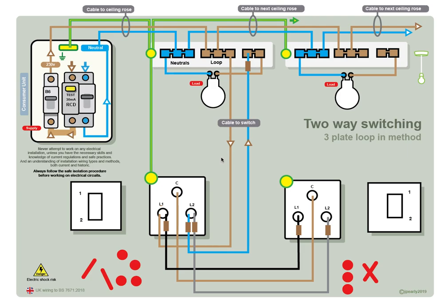Okay, we're going to look at two-way switching. Two-way switching is the ability to switch on a light from two different switches, two different locations. So let's have a look at what we've got on the screen.